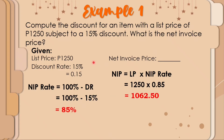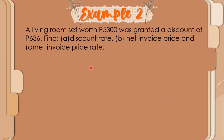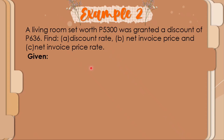You have two ways to compute the net invoice price. Now, another problem: a living room set worth 5,300 pesos was granted a discount of 636 pesos. Find: (a) the discount rate, (b) the net invoice price, and (c) the net invoice price rate. The given are: list price = 5,300 pesos and discount amount = 636 pesos.